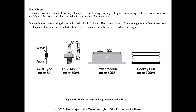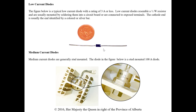Diode types — they're available in a wide variety of shapes, current ratings, voltage ratings, and mounting methods. Some are available with specialized characteristics for non-standard applications. One method of categorizing them is by physical shape. The current rating generally determines both its shape and mounting method. Diodes have three current ratings: low, medium, and high. We can see examples of axial, stud mount, power module, and hockey puck styles.